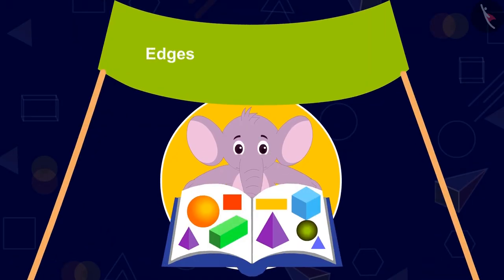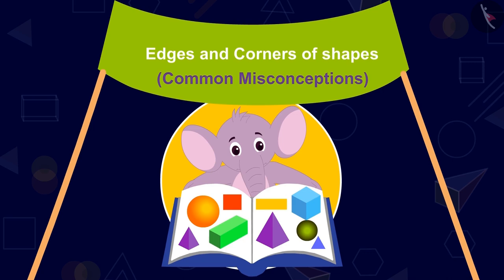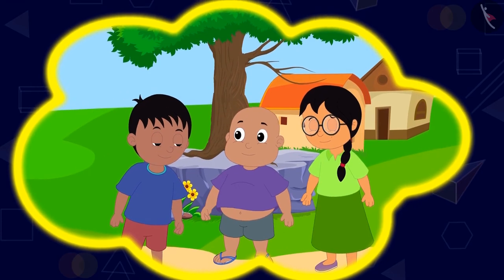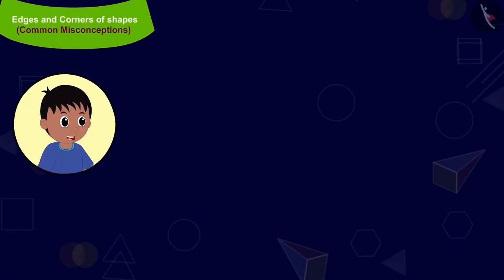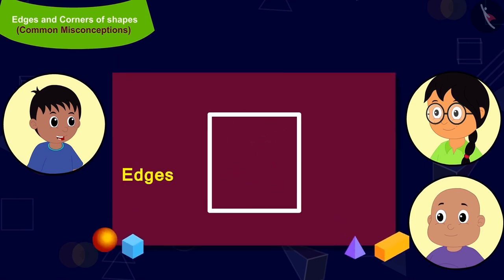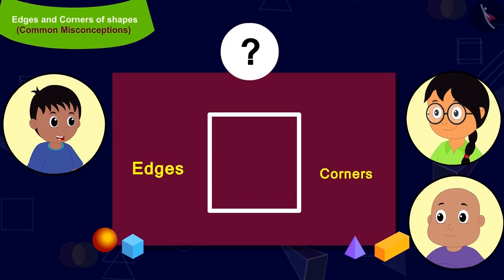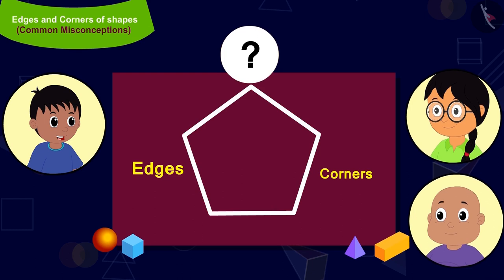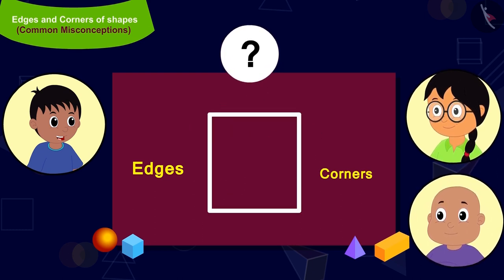In this video, we will see common mistakes related to the edges and corners of shapes. Raju, Bablu and Minu are playing a unique game. Raju will tell Minu and Bablu the number of edges and corners of shapes, and Minu and Bablu will have to make a shape according to the question asked.